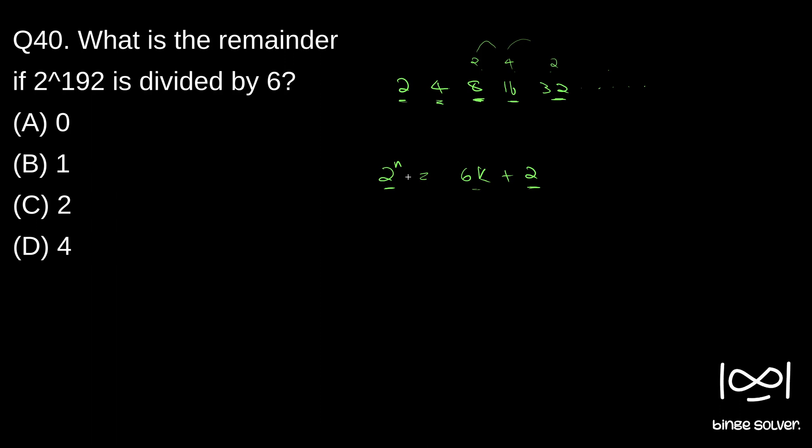So what happens when you multiply throughout by 2? 2 raised to n plus 1 is nothing but 6k times 2 plus 2 times 2, which becomes 4. So 6k times 2, as you can see this 2k is another integer, so 6k1 plus 4.